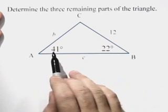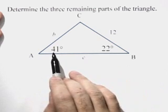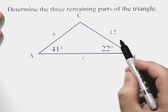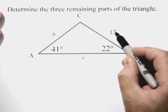We're given two of the angles. Angle A measures 41 degrees, angle B measures 22 degrees, and we're given the length of side A is 12 units.